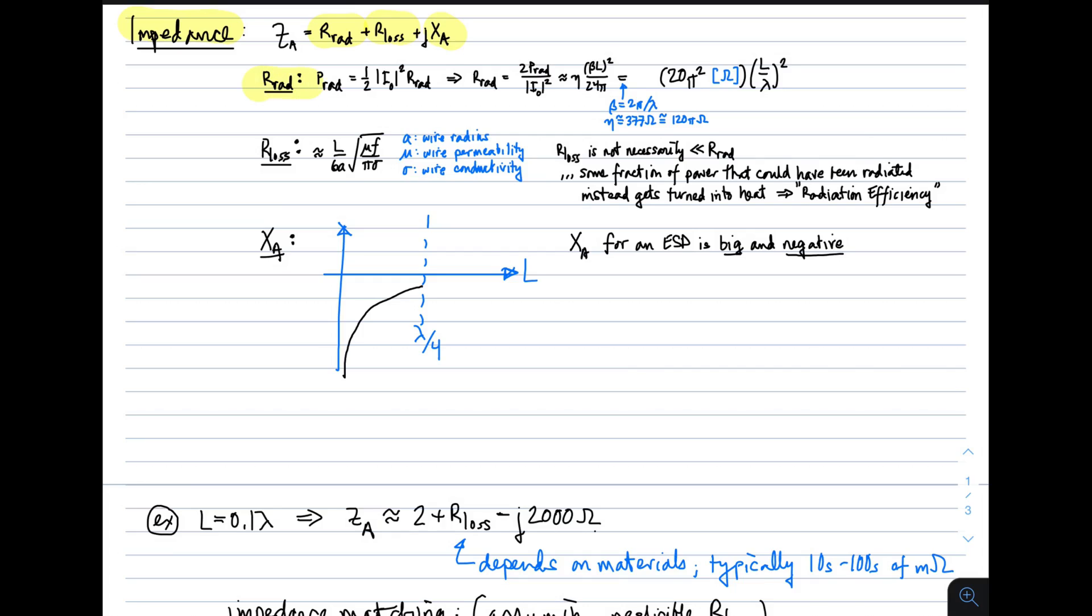So, radiation resistance, as usual, is related to radiated power by this expression. Simply square of the current times the radiation resistance, and take 1.5. That means the radiation resistance is just 2 times the radiated power divided by the magnitude of the current squared.